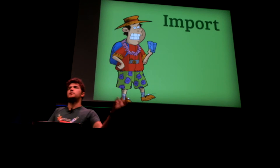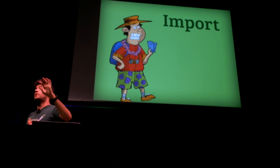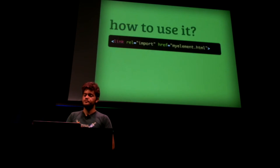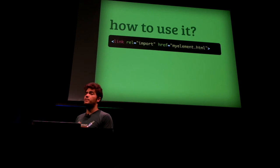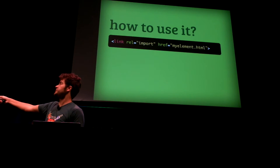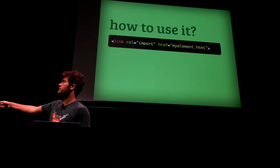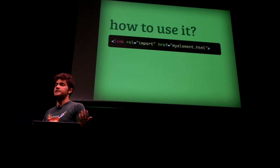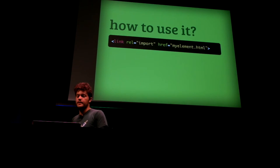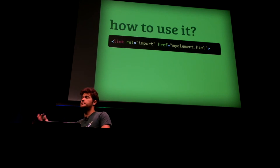So we know how to create tags, we know how to reuse blocks of code, we know how to encapsulate — but how do you load all of that? That's what HTML imports is for. HTML imports is as simple as using the same link tag we've been using to load CSS files, just changing the rel attribute to import. That's all you need to do. Now you can load HTML documents — not external CSS, but actual external HTML documents that can contain styles, scripts, and markup.